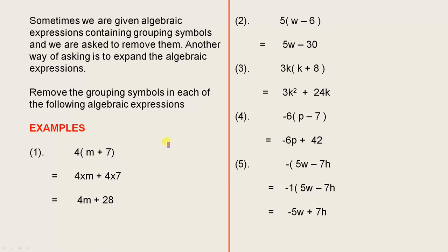So here are some examples. 4 outside of m plus 7. You multiply the 4 by each of the terms inside the grouping symbols. So I've had 4 times m, that's the multiplication sign there, it's not an x, it's a multiplication sign, plus 4 times 7. That gives us 4m plus 28. And you'll see there are no grouping symbols, they've been removed.